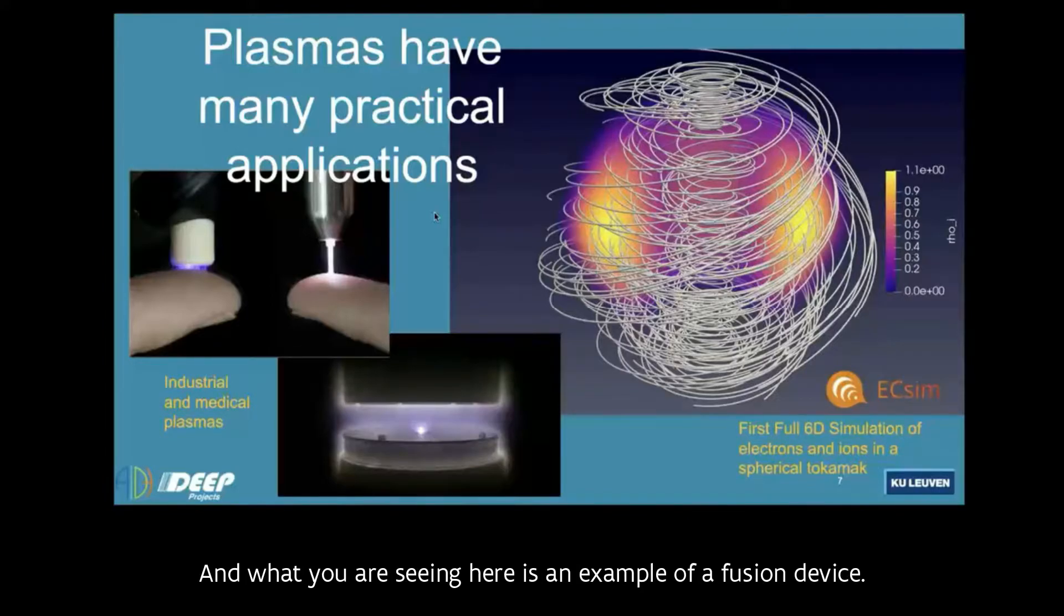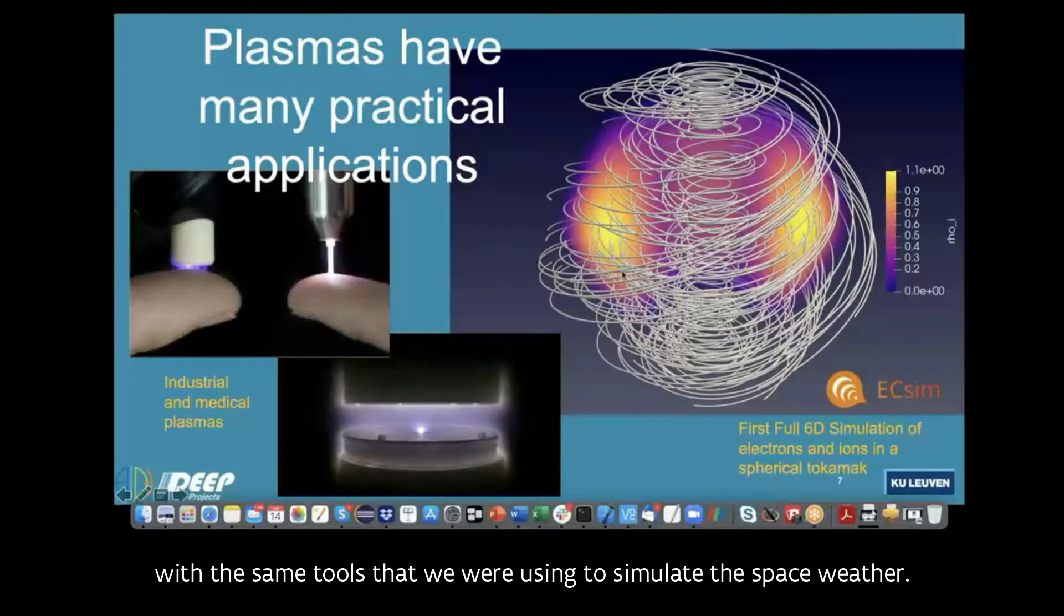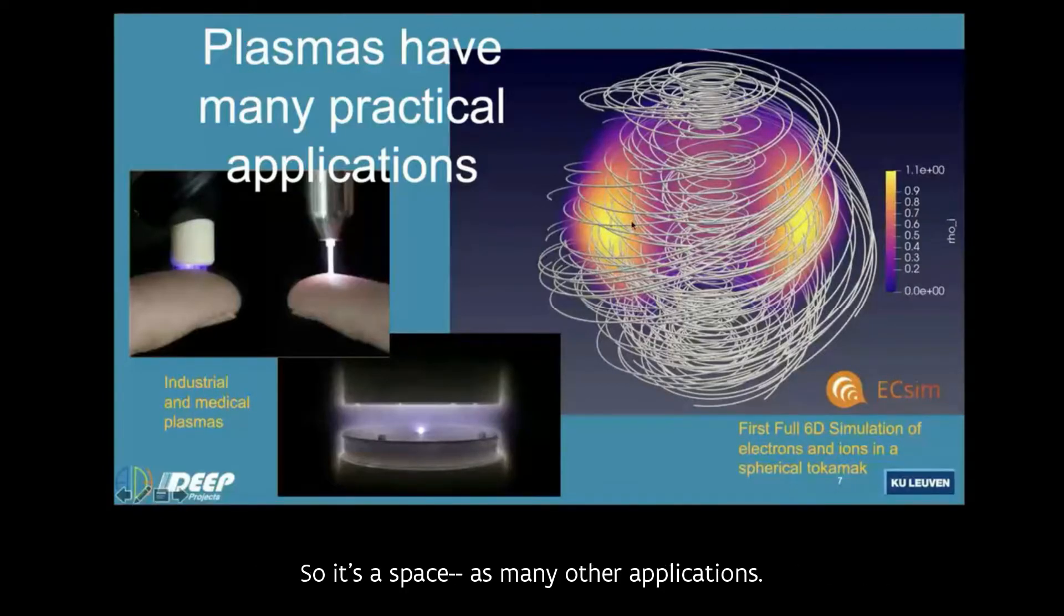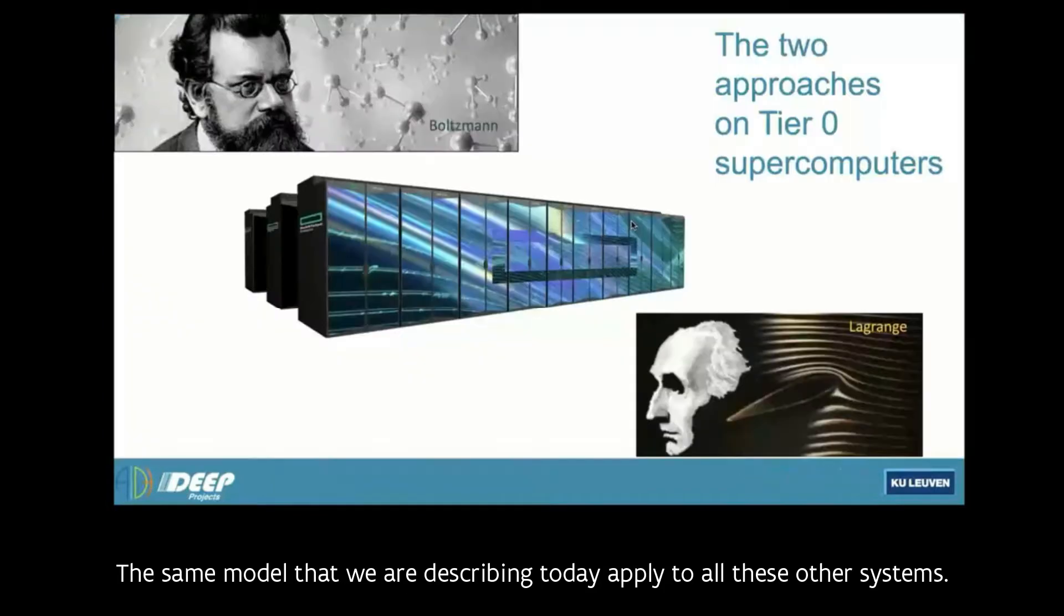And what you're seeing there is an example of a fusion device. It's a spherical tokamak in Korea that is simulated with the same tools that we were using to simulate the space weather. So it's a space, as many other applications, the same model that we're describing today, applied to all these other systems.